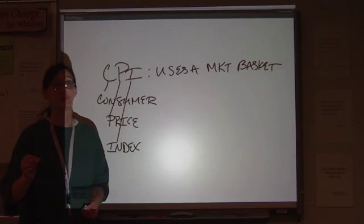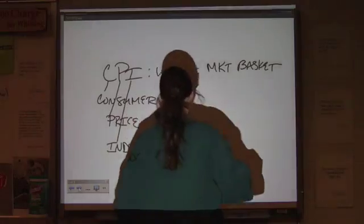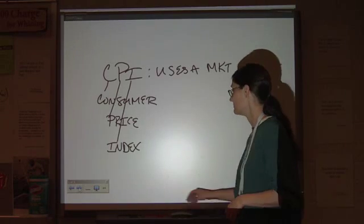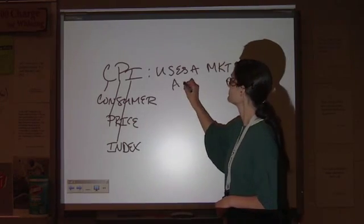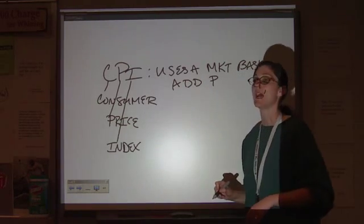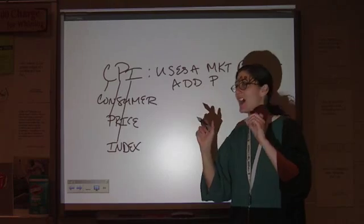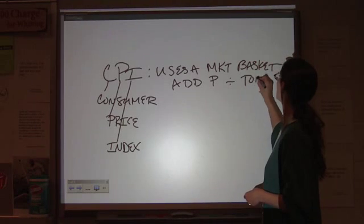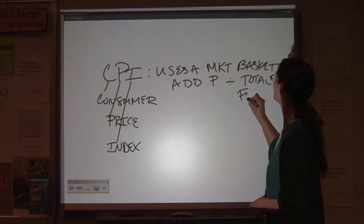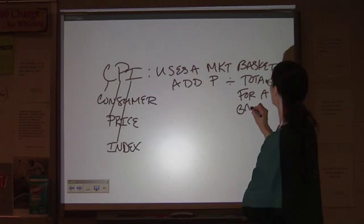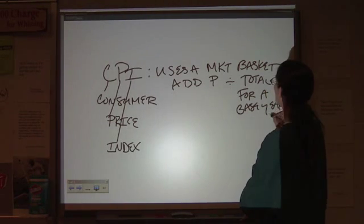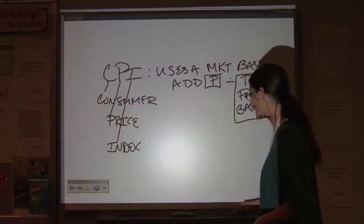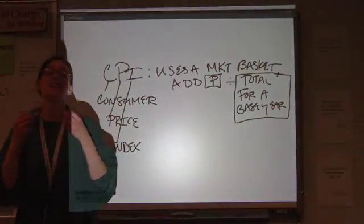That's the problem of inflation. So, using a market basket of about 300 consumer goods, we add up the prices. We add the prices, and then we divide that by the total for a base year. So, you have all of the prices added together in a big lump, and you divide it by the total for a base year, and you get an index number.